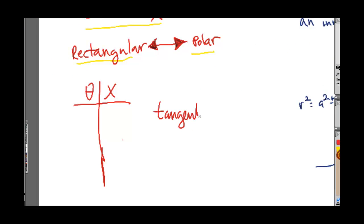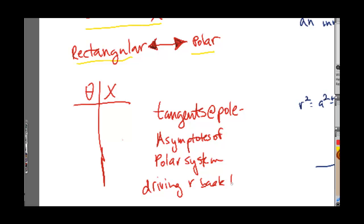Tangents at the pole are equivalent to vertical or horizontal asymptotes in the rectangular system. They're kind of like the imaginary barriers of the polar coordinate system. So the tangents at the pole, you're literally forcing your r back to the pole or the origin. So they're the, if you will, the asymptotes of the polar system driving r back to zero. And I'll explain that and clarify it. I just wanted to introduce the content so that when you see it later, you're not wondering what the heck I'm talking about.